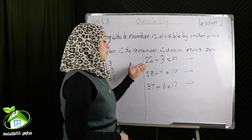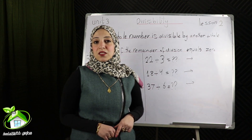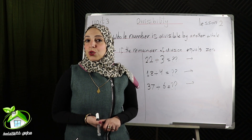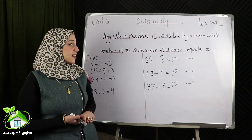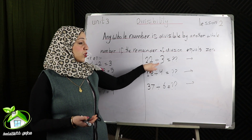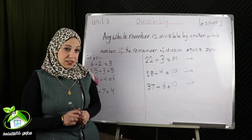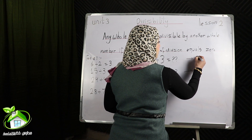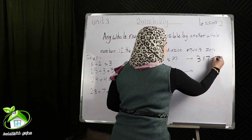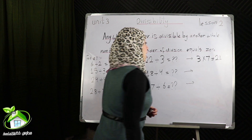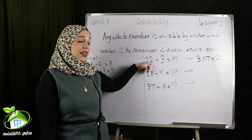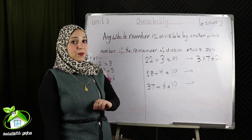22 divided by 3 equals what? I can't find 22 in the timetable of 3. So what can I do? I get the nearest number to 22 in the timetable of 3. Yes, 21. 3 times 7 equals 21 and the remainder equals 1. So 22 isn't divisible by 3.